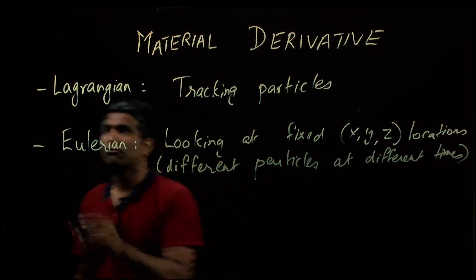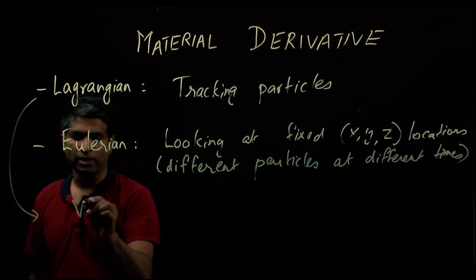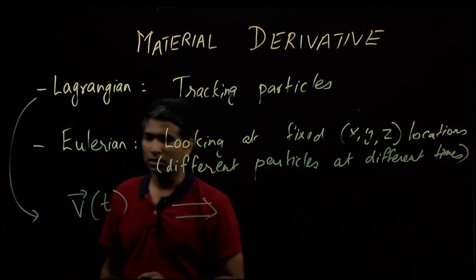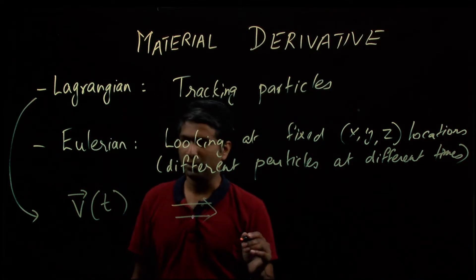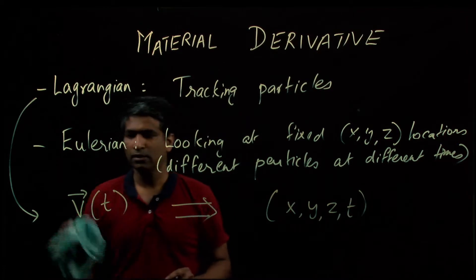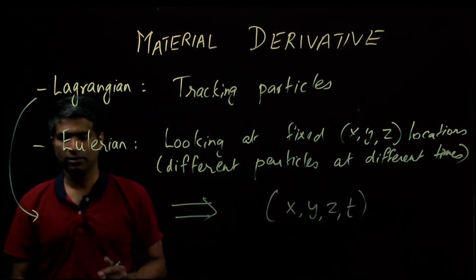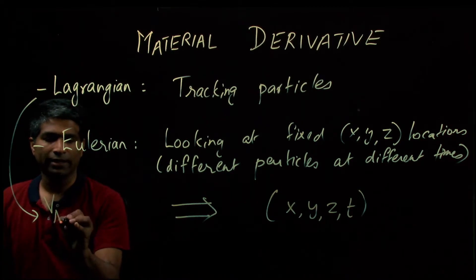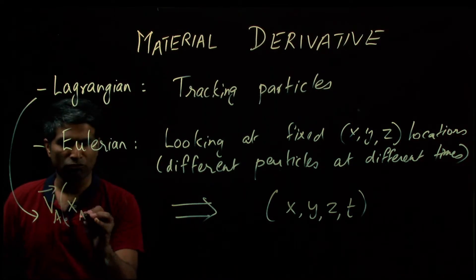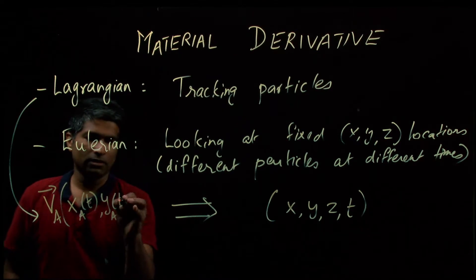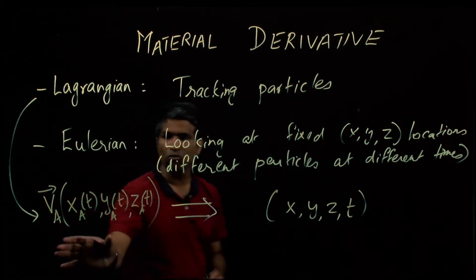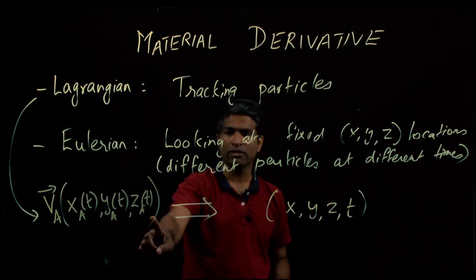So, we want to go from the Lagrangian system, once again, where you have a velocity v, that's a function of time, to a system where you have, let me rewrite that. For a particle A, I am looking at v as a function of time, but it's really a function of its spatial coordinate, which in turn is a function of time. So, we want to go from these xAs, yAs, and zAs, which are in turn a function of time, and so the total velocity is a function of all of these.